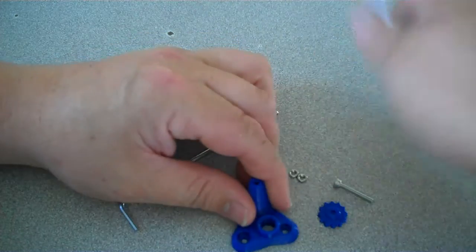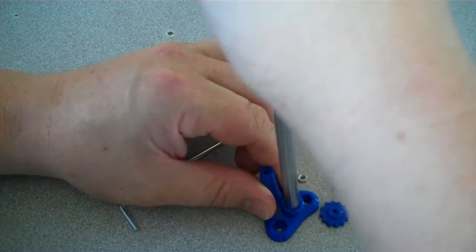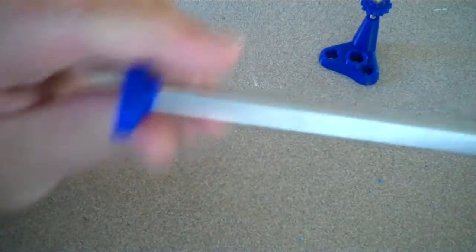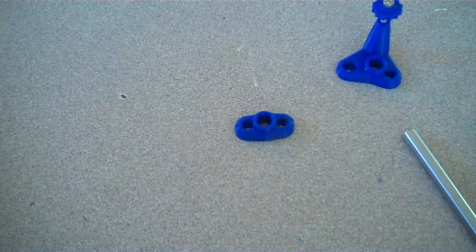Now we're going to work on attaching the Z rod holders, which will hold the vertical axis in place. Before you get started, make sure you check the fit of the Z rod, and if it doesn't fit, ream it out with an eight millimeter drill bit. After you check the fit, you can set the rod aside and save it for later.